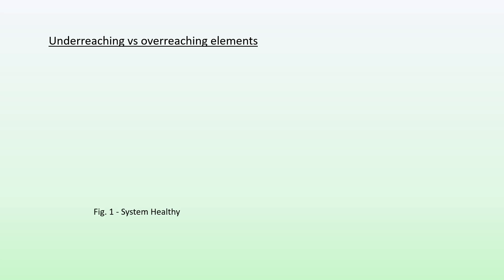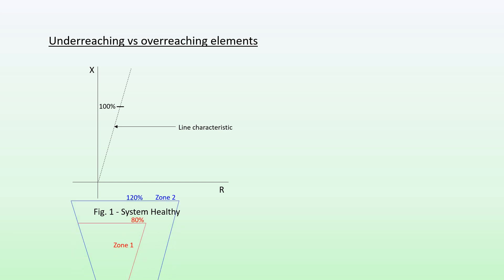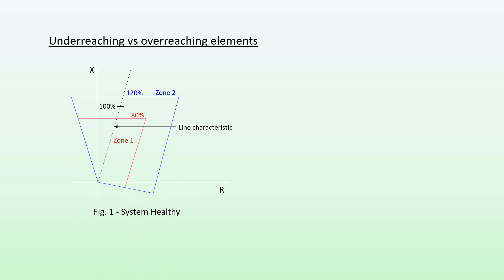Let's start off with a healthy system. We have our impedance plane, and to that we add a distance relay characteristic. The distance from the origin to the hundred percent point represents the impedance of our transmission line. The first dashed line is at a certain angle with respect to the horizontal — that angle being the line characteristic angle.